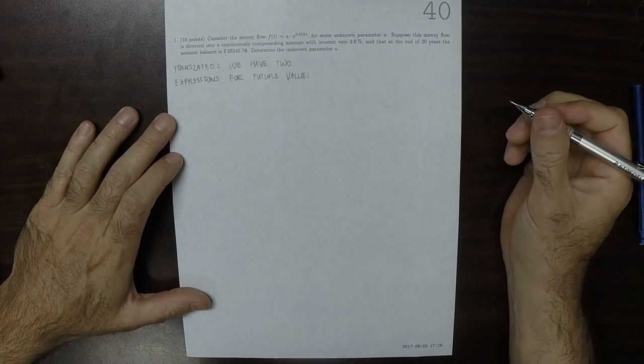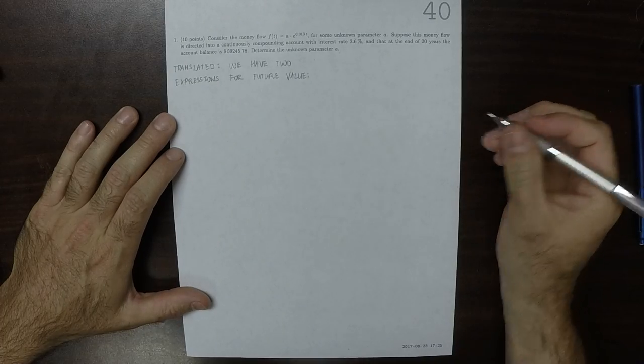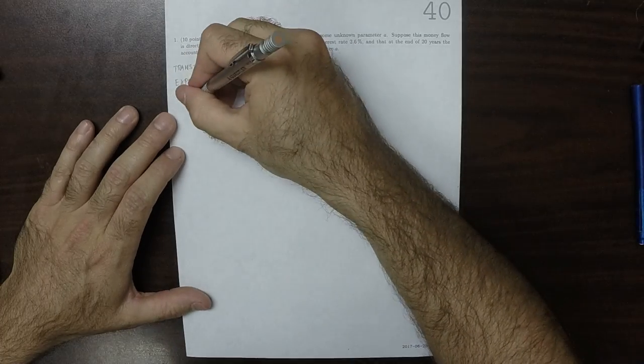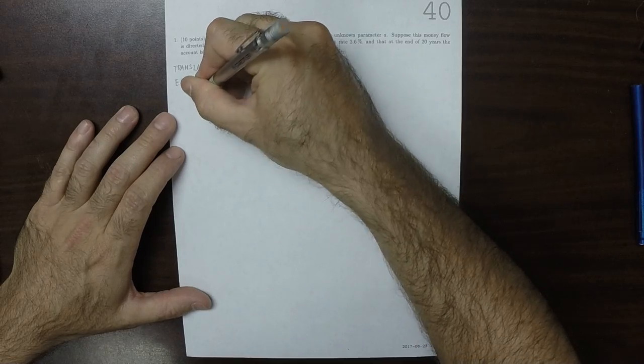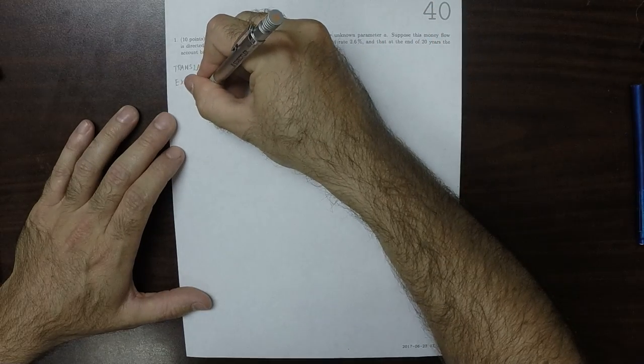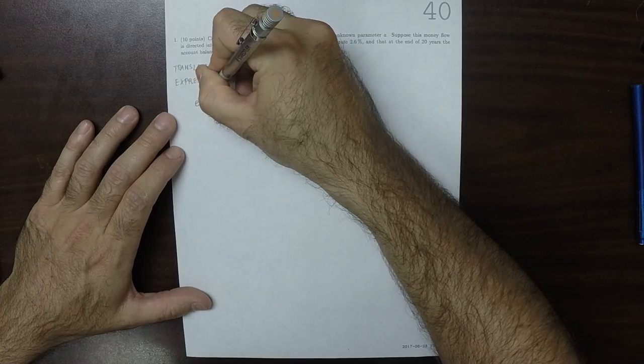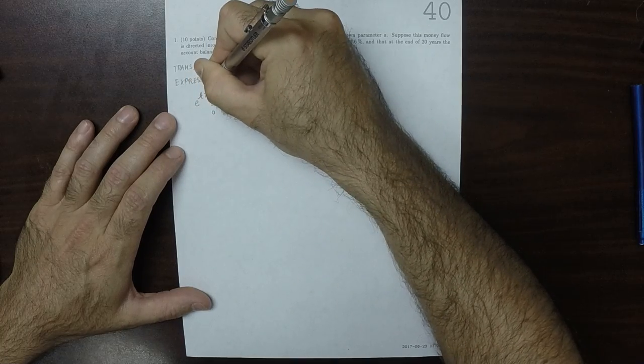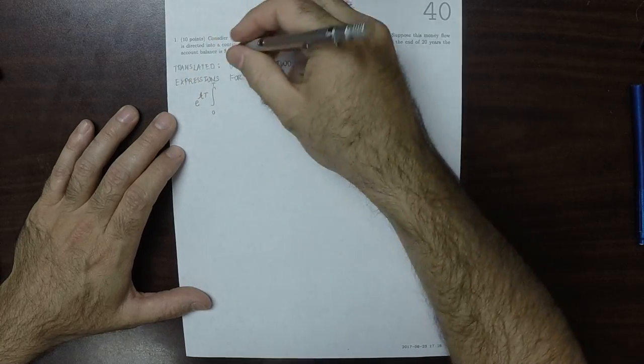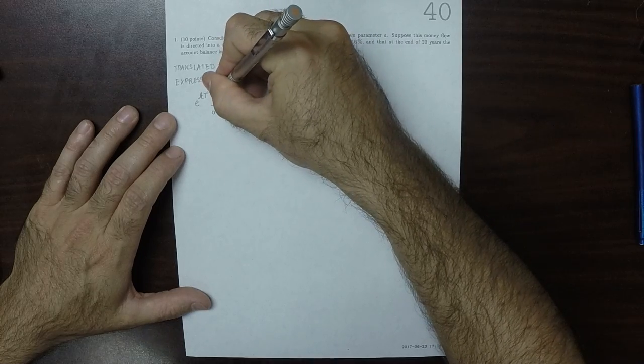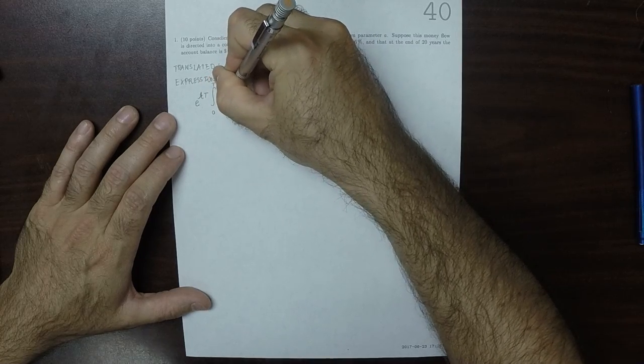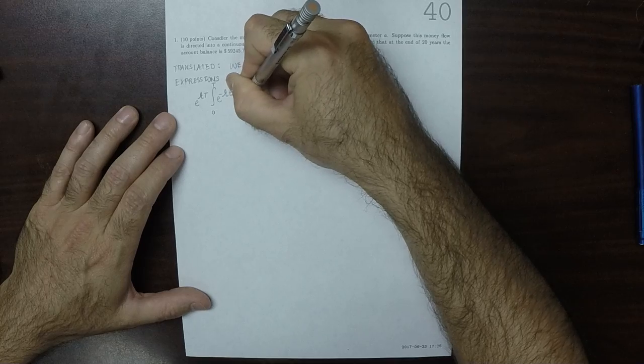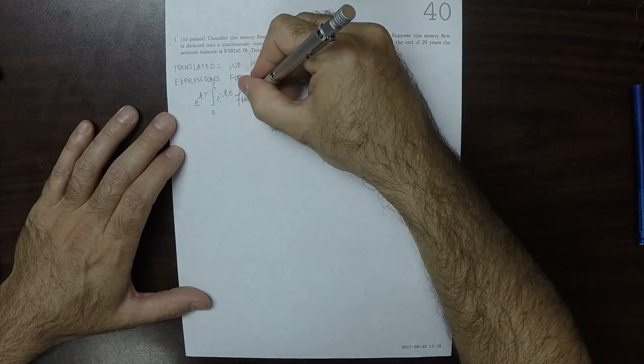On the one hand, we know that the future value is exponential rt, integral 0 to big T, and then exponential negative r little t, f of little t, dT.